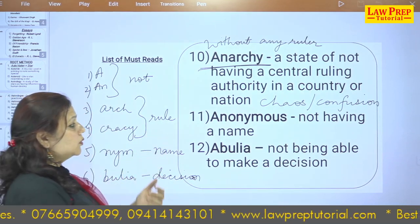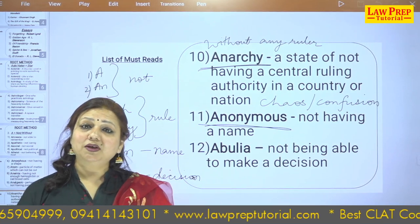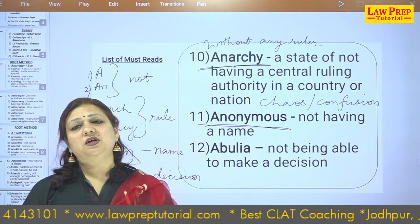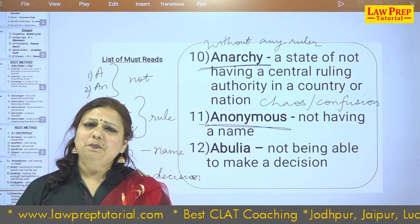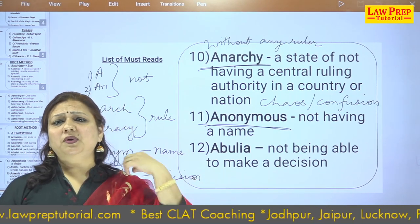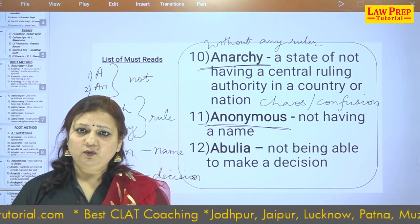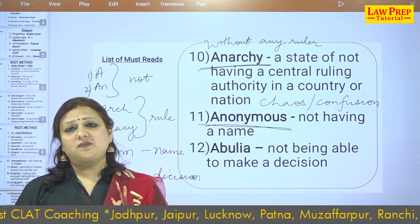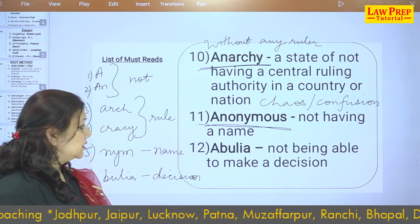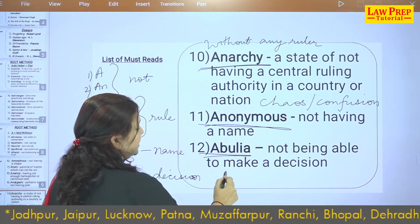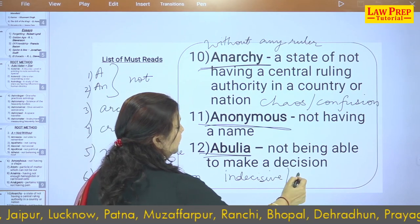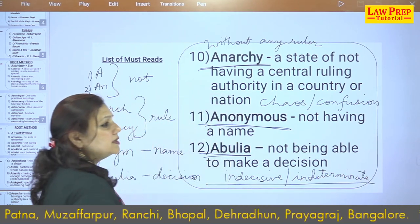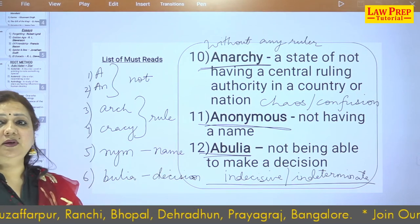ANONYMOUS means without name. 'AN' plus 'onym' — 'onym' means name, so anonymous means the identity is not known. Sometimes writers use pen names — like Robert Ludlum writing under a pen name, or Charles Lamb writing under the pen name Elia, or Addison writing for The Spectator. These are called pseudonyms. ABULIA: not able to take decisions — an indecisive or undetermined state where you cannot decide what to do and what not to do.